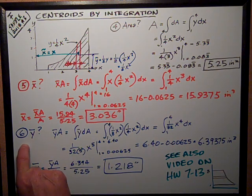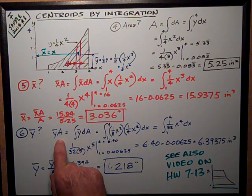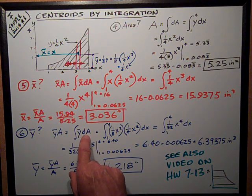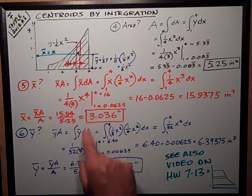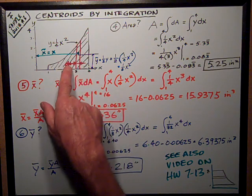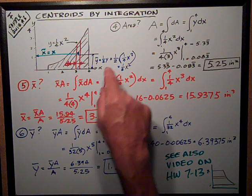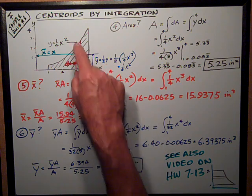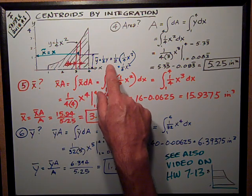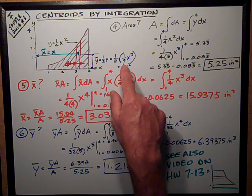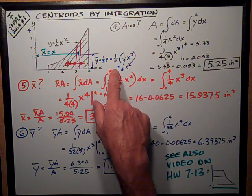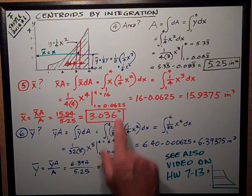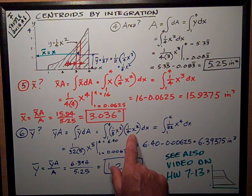Finally, problem number six on the sample quiz was what's y-bar? Y-bar A equals the integral of y tilde dA. Now, y tilde is the centroid of that little elemental strip that's dx wide and y tall, so that's half of the value of y. Y tilde equals one-half of y at any point along there. That equals one-half of y, which is one-fourth x squared. Evaluating that out, y tilde equals one-eighth x squared. I need to multiply y tilde one-eighth x squared by y dx.